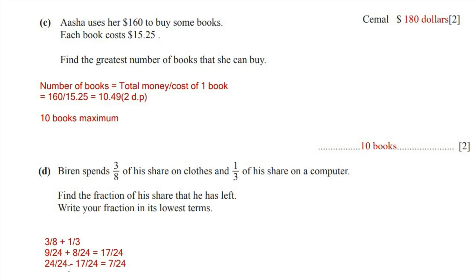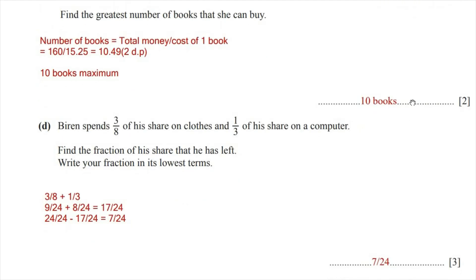To find the fraction of his leftover money, we subtract 17/24 from 1. So 1 minus 17/24 equals 7/24. Since the fraction is already in its lowest terms, the final answer — the fraction of his share that he has left — is 7/24.